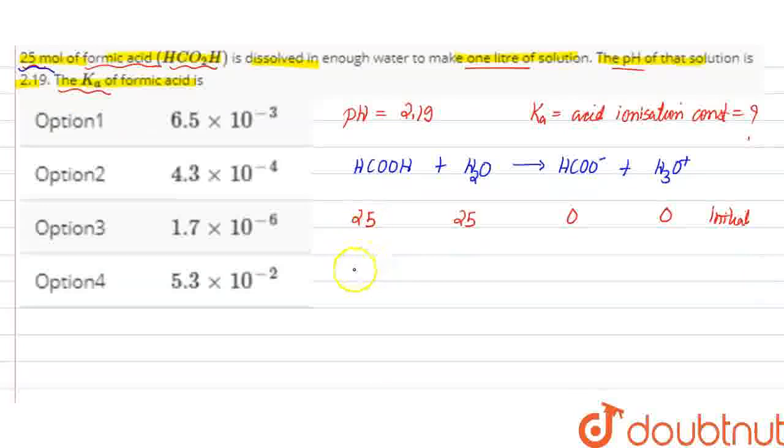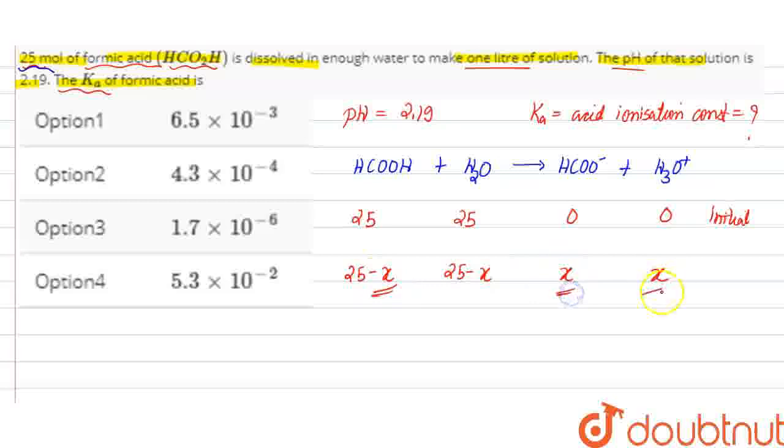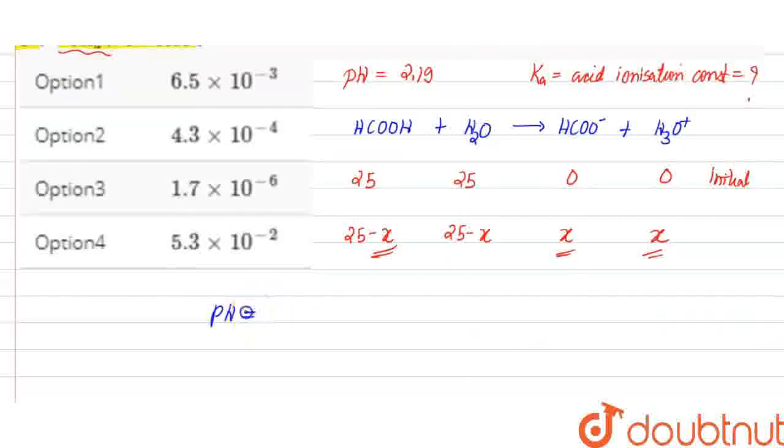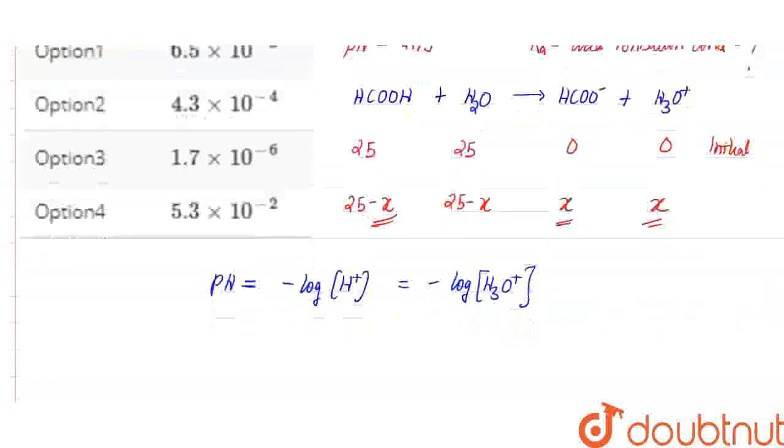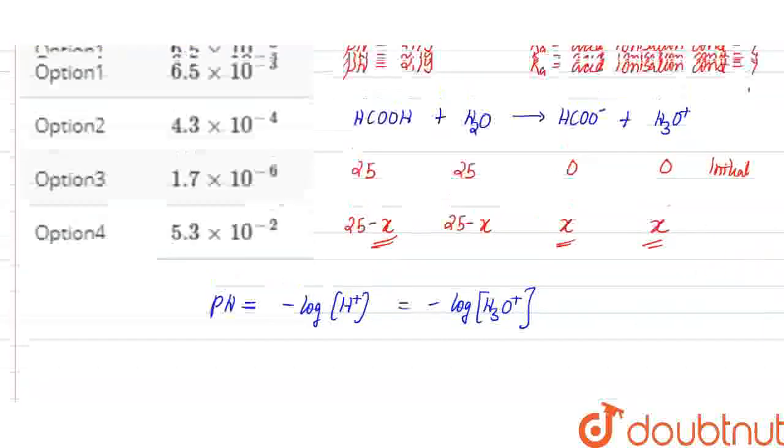After some time, something will be dissociated. Let's assume that x moles will be dissociated. If I talk about pH, what is my pH? It depends on the concentration of hydronium ions. The pH value is given as 2.19.